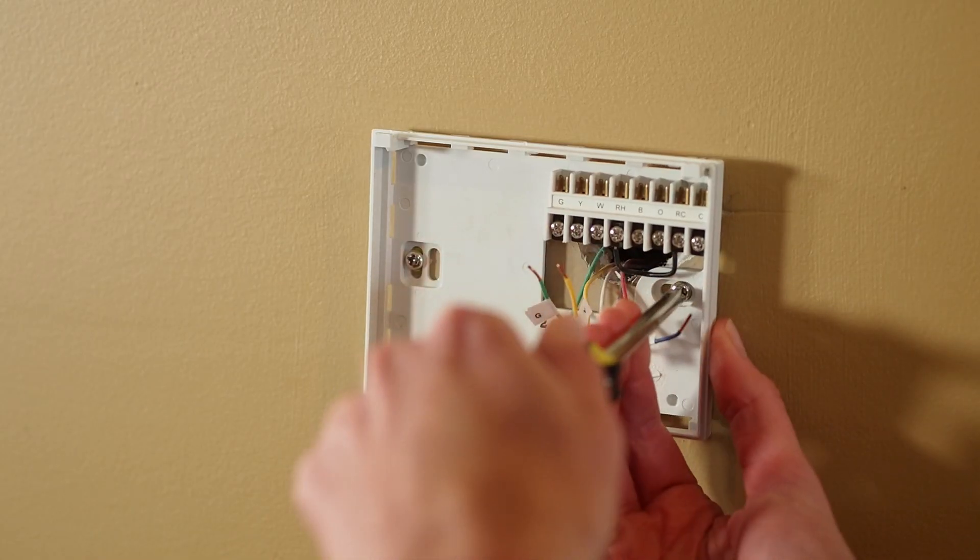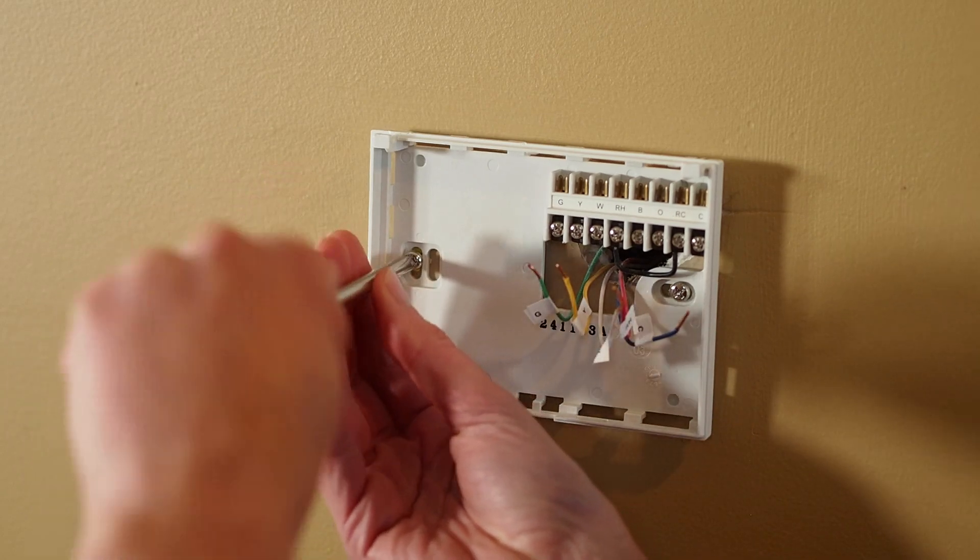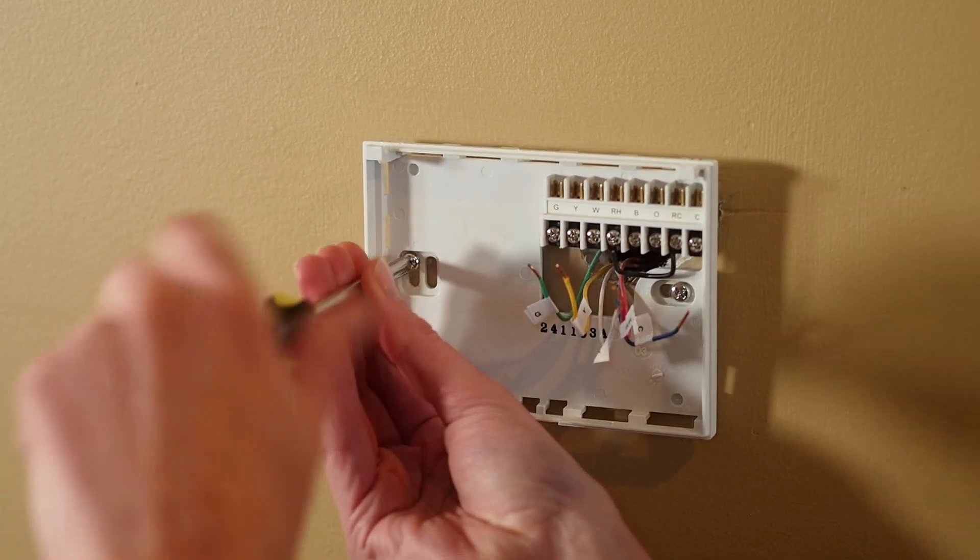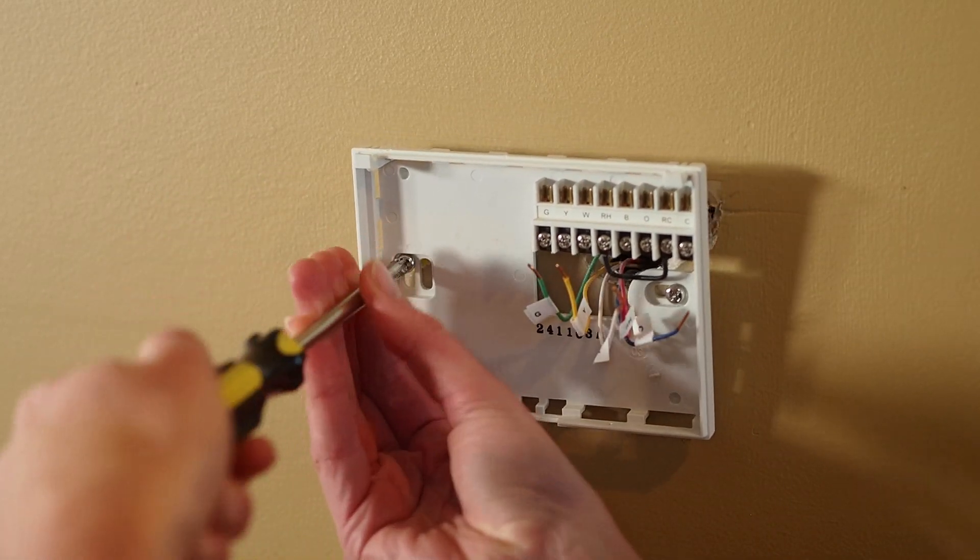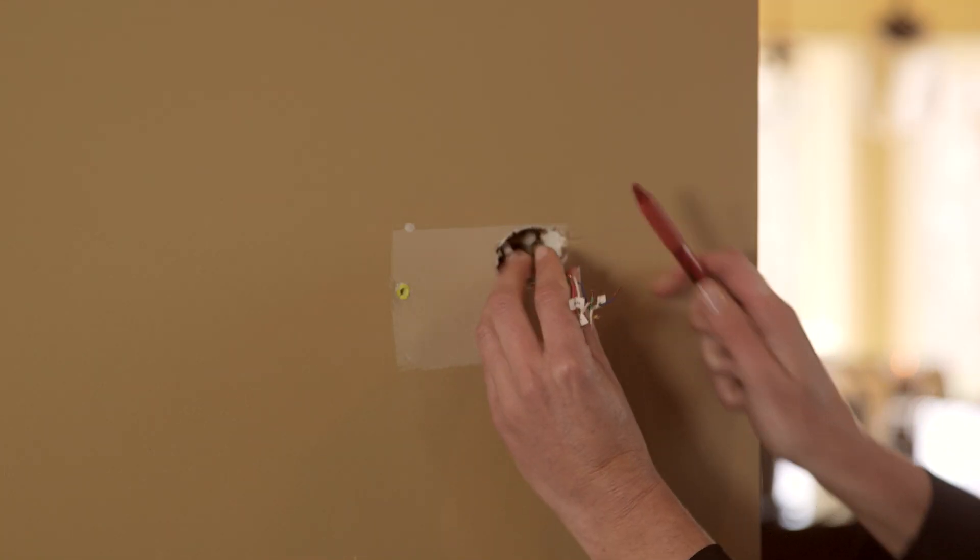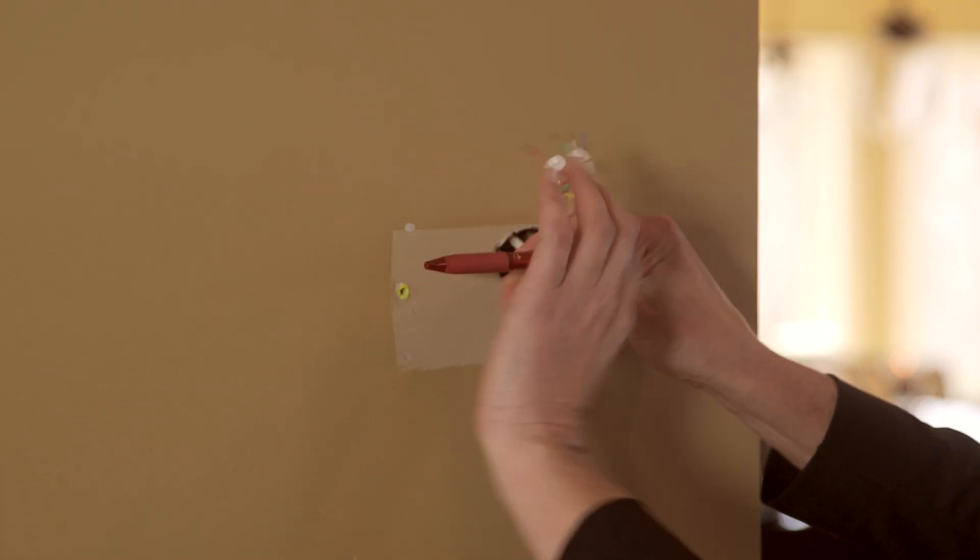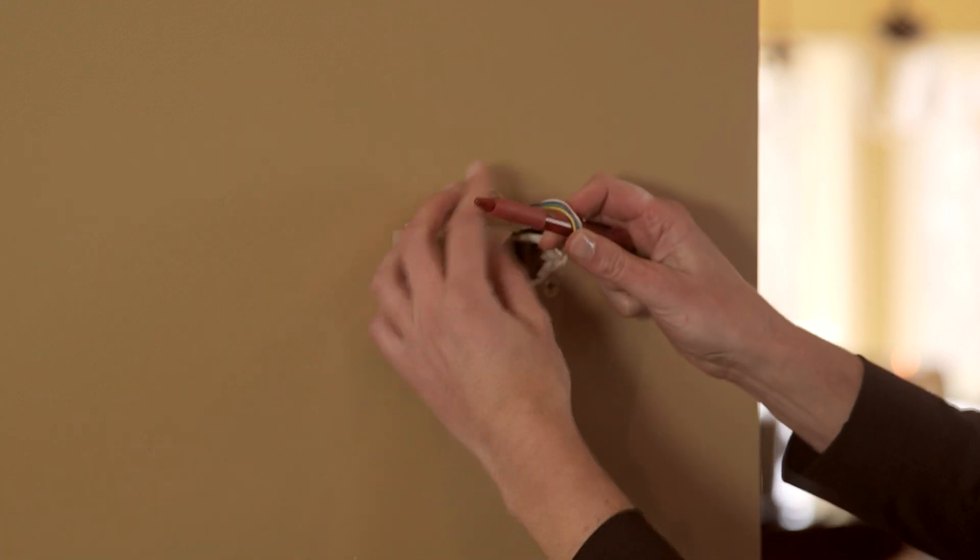Now, remove the wall plate of your old thermostat. Take care so none of the wire labels fall off or the wires fall through the wall opening. Here's a helpful hint: wrapping the wires around a pencil or pen can prevent them from falling back through the wall.